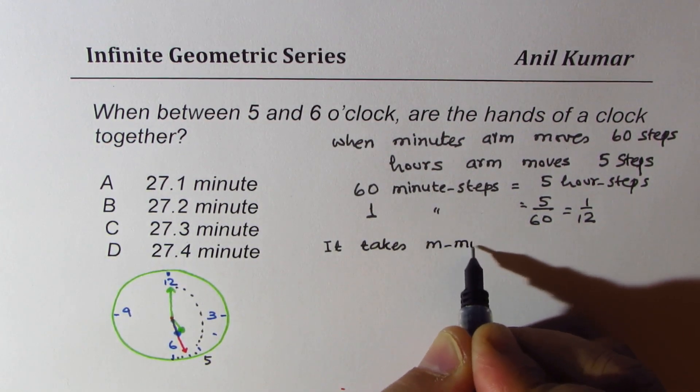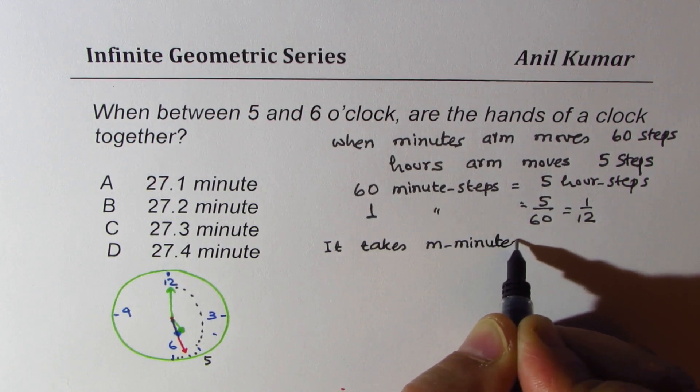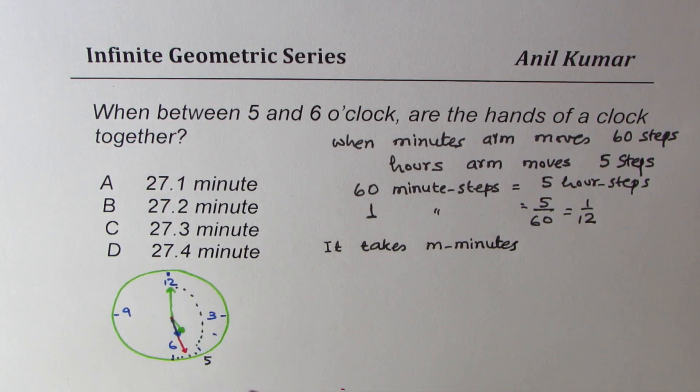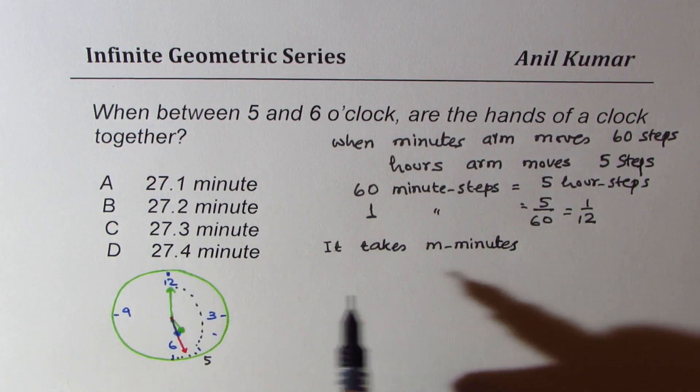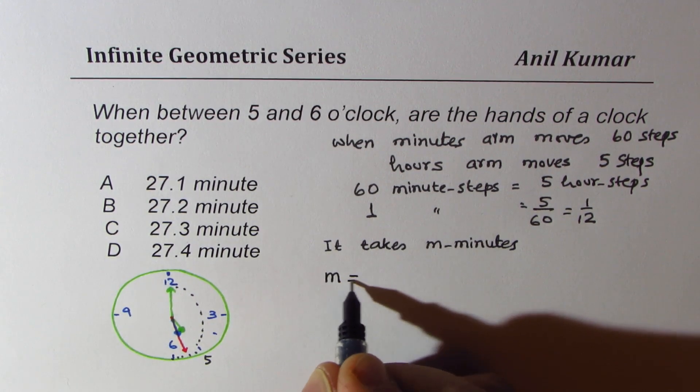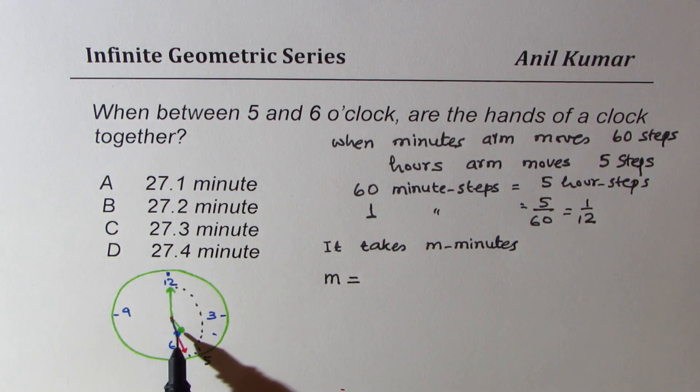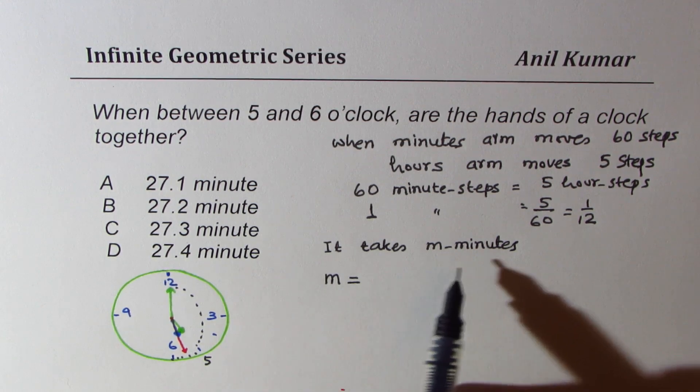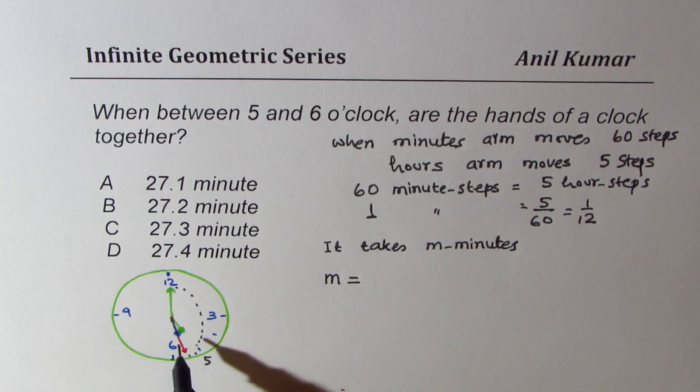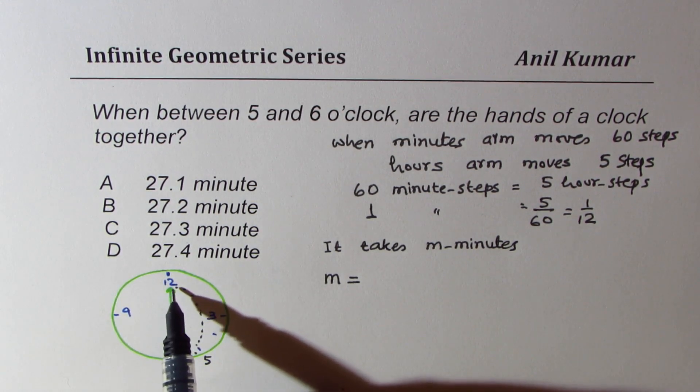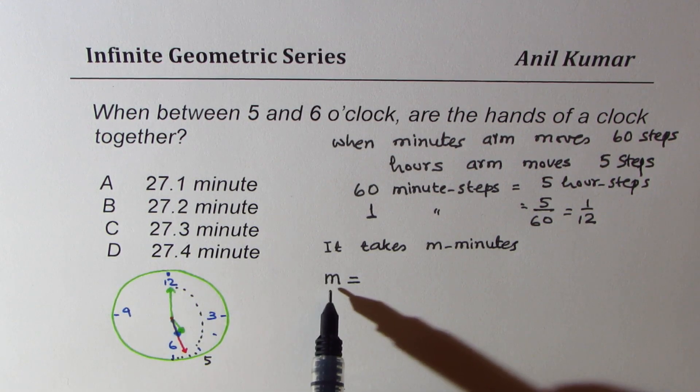So let us say that it takes m minutes. So that means m minutes of steps. In that case, m should be equal to distance moved by the clock, by the minute steps.